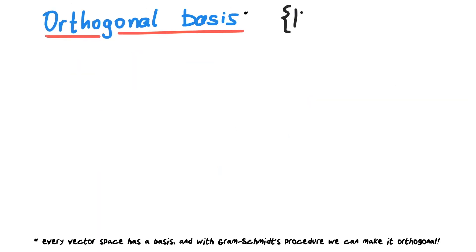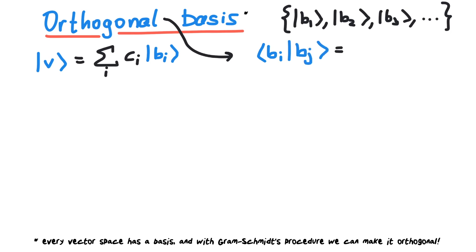This is why we usually make use of an orthogonal basis system. We can expand every vector as a sum over basis elements. If we choose the basis to be orthogonal, we can calculate a bra-ket product.